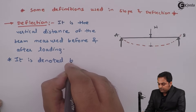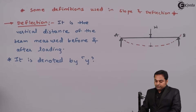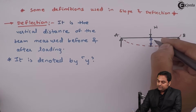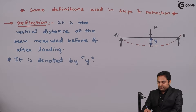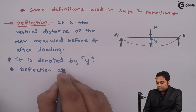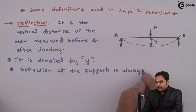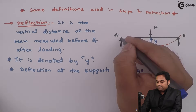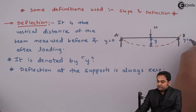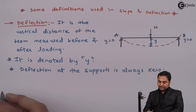Deflection is denoted by y in this chapter. So the deflection here is y. Deflection at the supports is always zero — at A and B the deflection is zero, that is y equals zero at A and B respectively.